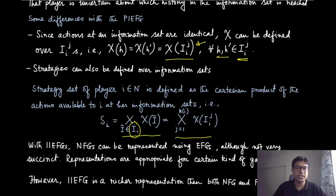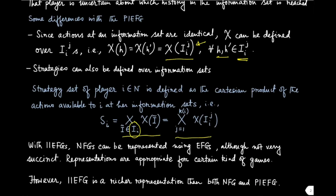With the IIFG we now have a much richer representation. With a perfect information extensive form game we are not able to represent normal form games, but with the IIFG extension we can represent NFGs. A word of caution: it is not a very succinct representation — NFG is most appropriate for simultaneous move games, while IIFG and PIFG are more appropriate for sequential move games. Nevertheless, IIFG is definitely a richer representation than both NFG and PIFG.